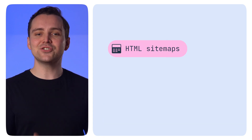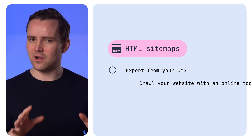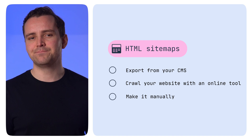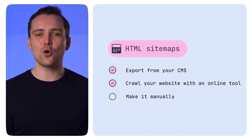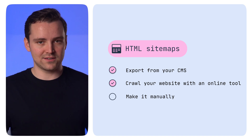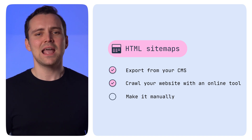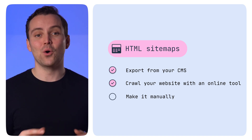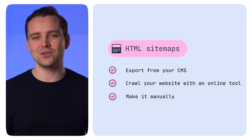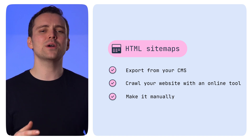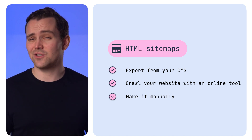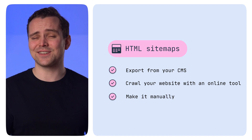For HTML sitemaps, your options are actually exactly the same: export from your CMS, crawl your website with an online tool like SlickPlan and let it generate your sitemap for you, or make it manually, which requires listing every URL on your site. Time-consuming, to say the least.